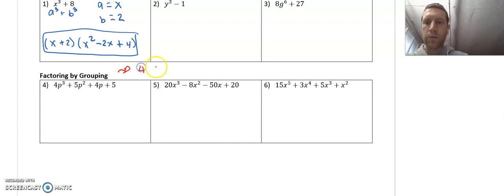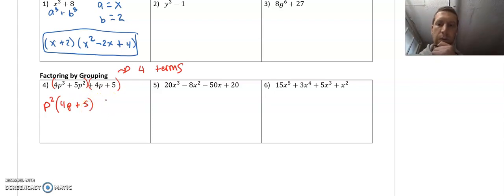Factoring by grouping: Look for this when you have four terms. What we want to do is group the first two together, group the second two together. So now I can factor out what I have in common. 4p cubed and 5p squared, I think all I have is p squared, which leaves me with 4p plus 5.